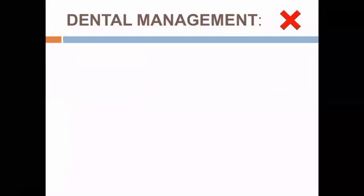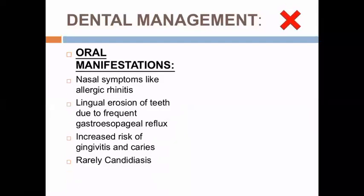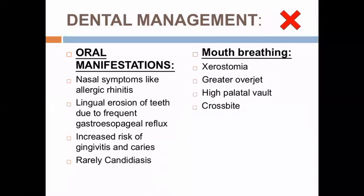Next, we come to the dental management of a patient who does not tell you that he is asthmatic, or maybe he himself is unaware that he is asthmatic. In such patients, we have to look up for the oral manifestations. These include nasal symptoms like allergic rhinitis, lingual erosion of teeth due to frequent gastroesophageal reflux, increased risk of gingivitis and caries, and rarely candidiasis. Another very important feature of such patients is mouth breathing, which leads to xerostomia, greater overjet, high palatal vault, and crossbite.